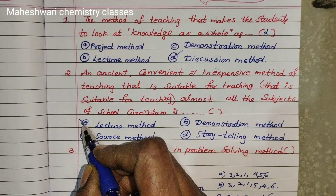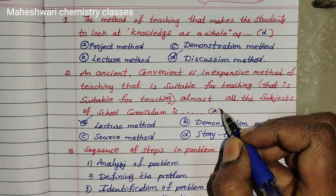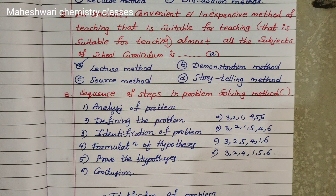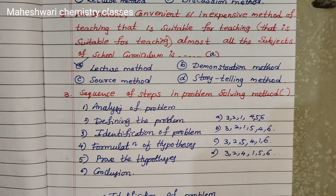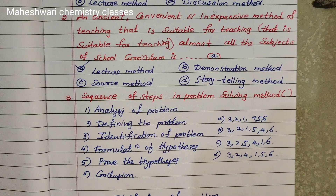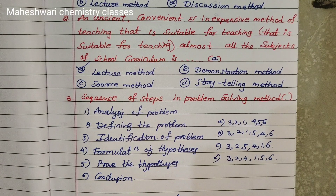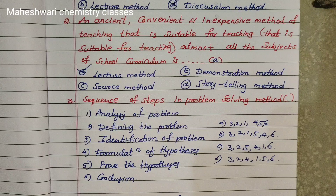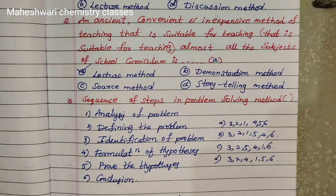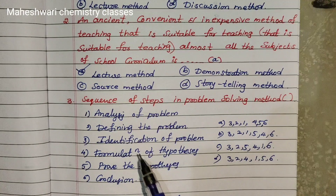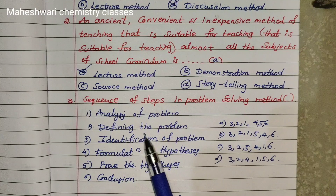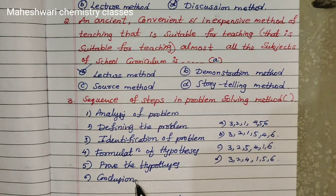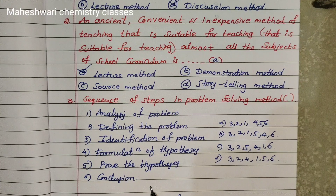Third question: Sequence of steps in the problem-solving method — this is a very important term. We have to arrange the correct order. The steps are: Analysis of problem, Defining the problem, Identification of problem, Formulation of hypothesis, Prove the hypothesis, Conclusion.